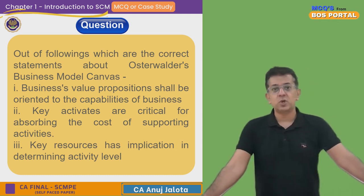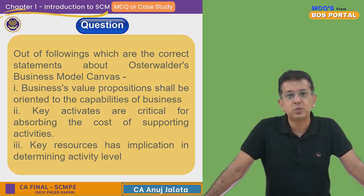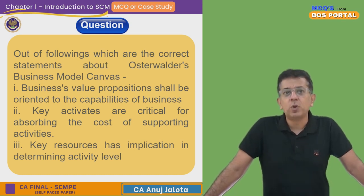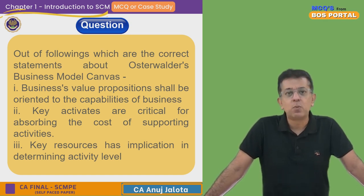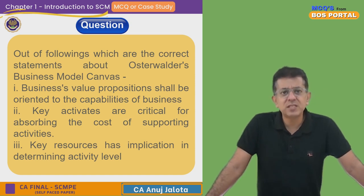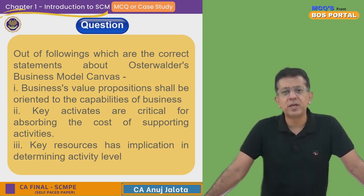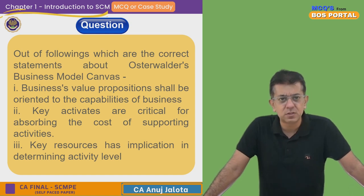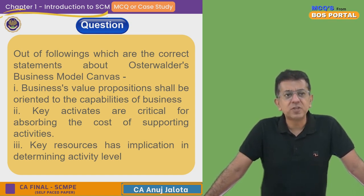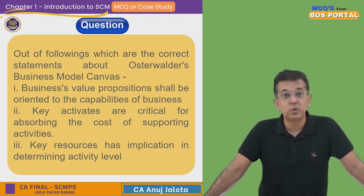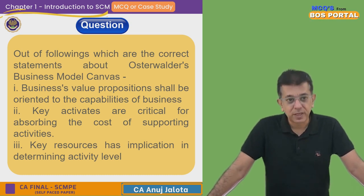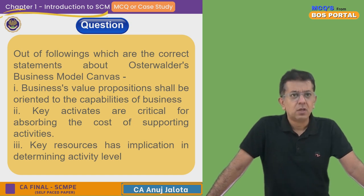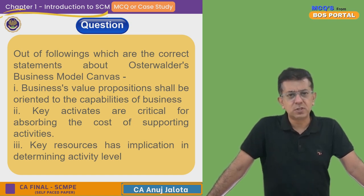Let's start with the question for today. This is still chapter number one — Introduction to SCM. The question is: out of the following, which are correct about Osterwalder's Business Canvas Model? Statement one: business value proposition shall be oriented to the capabilities of the business. Statement two: key activities are critical for absorbing the cost of support activities. Statement three: key resources have implication in determining activity level.